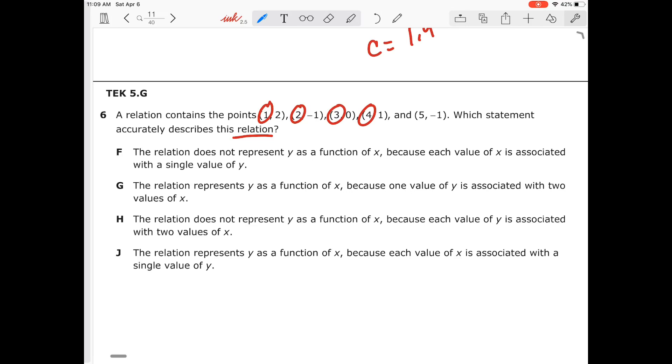I have one, two, three, four, and five. My x value does not repeat, so this is a function. So I can eliminate the answer choice F, and I can eliminate the answer choice H because it says it's not a function.